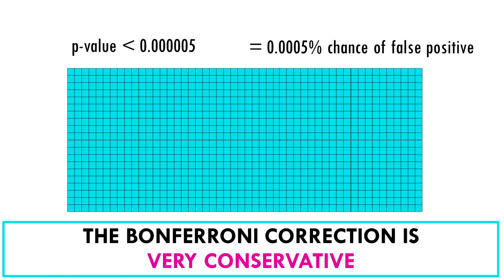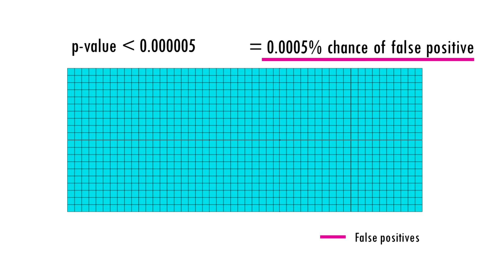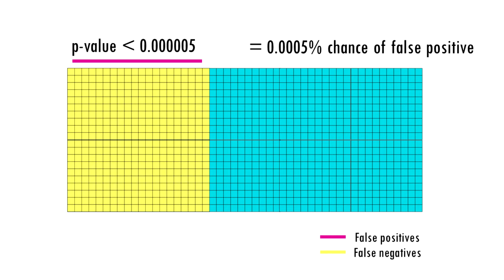The problem with the Bonferroni correction is that it is too conservative. Yes, it lowers the chances of false positives, but at what cost? We are also demanding much stronger correlations before we conclude they are statistically significant. So we get a lot of false negatives — genes that are less strongly correlated but are still correlated, and will not be considered at all. So we will miss a lot of interesting genes.